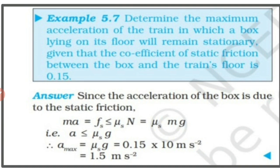Welcome to today's session. We are discussing some problems. First, Example 5.7: determine the maximum acceleration of the train in which a box lying on its floor will remain stationary, given that the coefficient of static friction between the box and the train's floor is 0.15. In this question, the box is inside a train which is in accelerated motion.